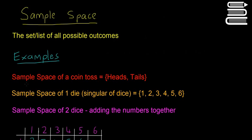For example, the sample space of a coin toss is going to be just a list of the different outcomes from a coin toss, and in this case it's either heads or tails, because that's all you can get when you toss a coin.